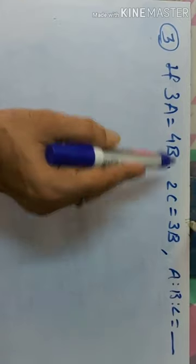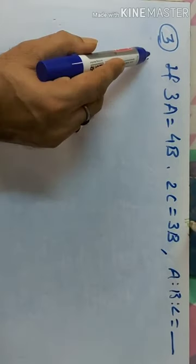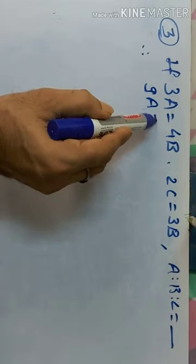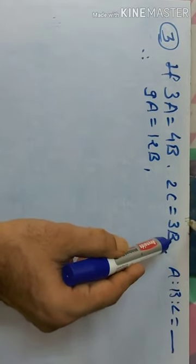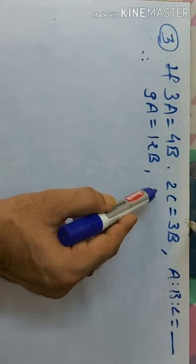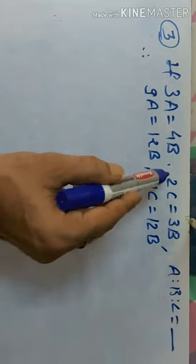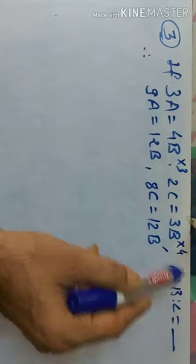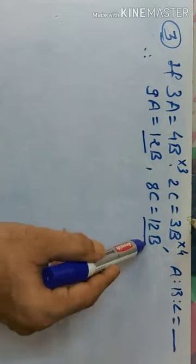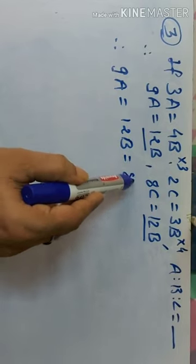Question number 3: 9A = 12B = 8C। इसके लिए हम 3 से multiply करते हैं दोनों तरफ। Therefore 9 = 12×3/... दोनों equations को common denominator पर लाने के लिए: 3 से multiply करें और 4 से multiply करें। तो 9A/12 = 12B/12 = 8C/12 form में देखते हैं, और LCM 72 निकालते हैं।